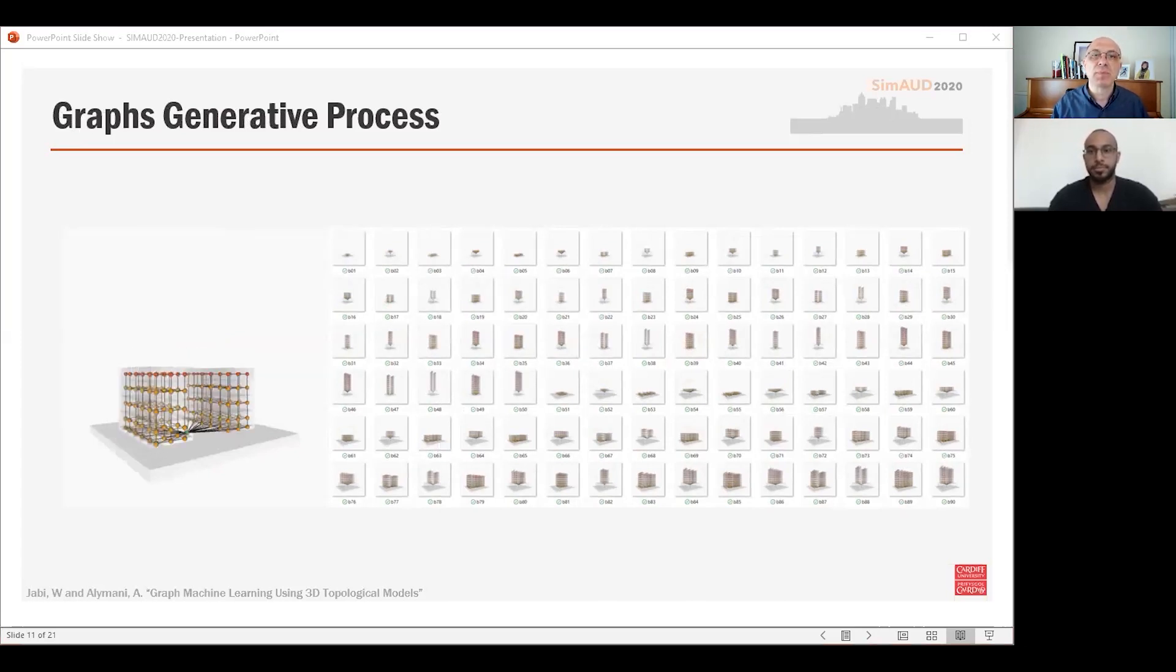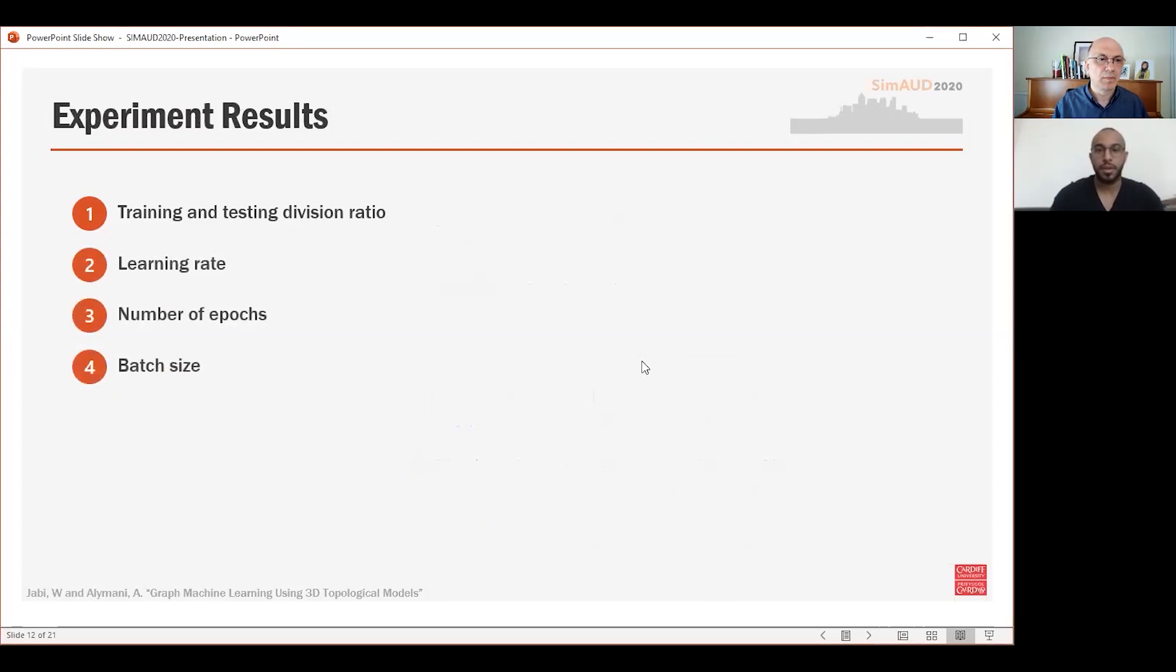I will now hand the presentation to Abdul who will explain the hyperparameters and the results of our experimental case study. Thank you, Wassim. To explain the experimental results, we employed the sensitivity analysis approach. We varied the following hyperparameters: training and testing division ratio, learning rate, number of epochs, and batch size.